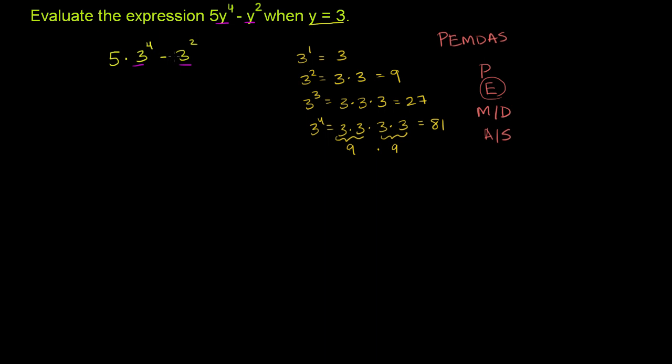So we now know what 3 to the fourth is. We know what 3 squared is. Let's just put it in the expression. So this is going to be equal to 5 times 3 to the fourth. 3 to the fourth is 81, so 5 times 81 minus 3 squared. And we have 3 squared right over here, it is equal to 9. 5 times 81 minus 9.